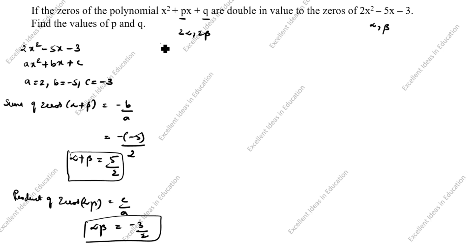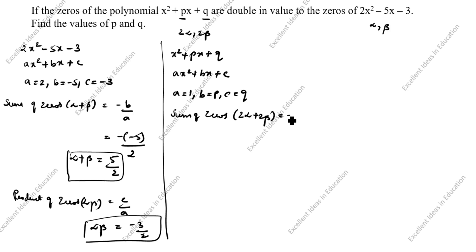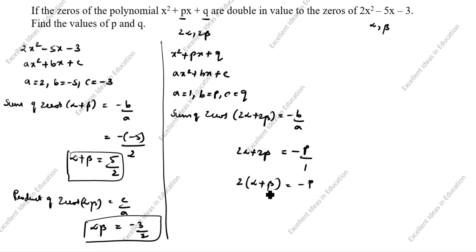But we need to find p and q. For the doubled zeros, we take 2 alpha plus 2 beta. For x squared plus px plus q, a is equal to 1, b is equal to p, c is equal to q. Sum of zeros: 2 alpha plus 2 beta equals minus p by 1. Taking 2 as common: 2 times (alpha plus beta) equals minus p. Alpha plus beta is 5 by 2, so 2 into 5 by 2 equals minus p. The 2s cancel, giving p is equal to minus 5.